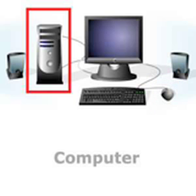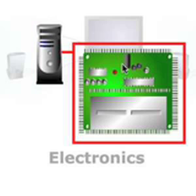The computer is normally housed in a metal or plastic casing, sometimes called the system unit, and contains the following items: the electronics, such as the central processing unit, or CPU, and all the other microchips.